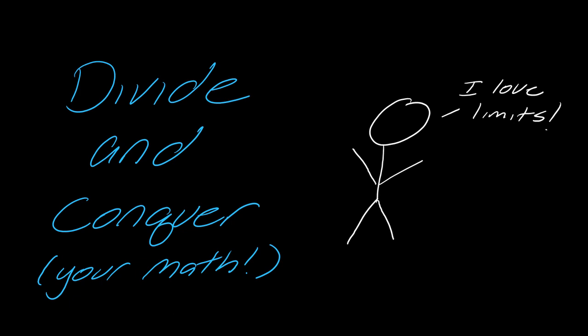Those are some of the most common algebraic tricks you'll use with limits when you get 0 over 0: factor and cancel, multiply by the conjugate, and simplify complex fractions. It's really rare that a limit does not exist, and if you think it doesn't, use the graph to help you decide. I have other videos that explain this in more detail — hopefully I'll see you in another one. Thanks for watching.